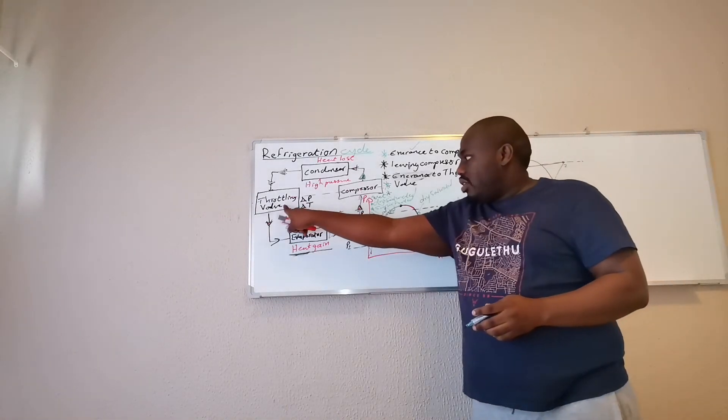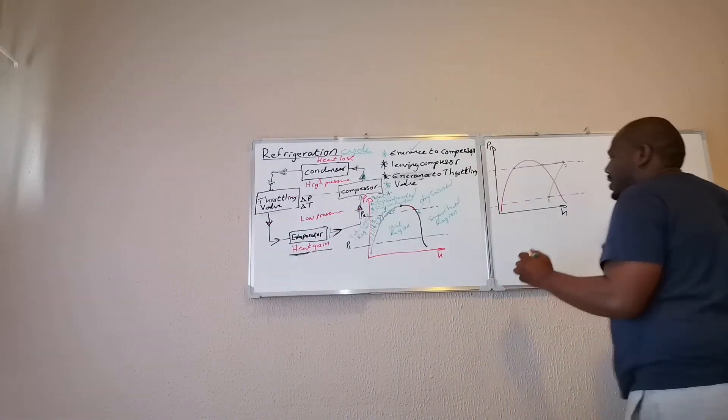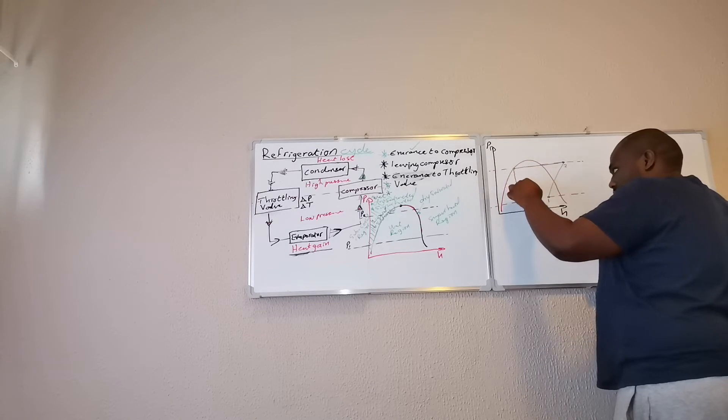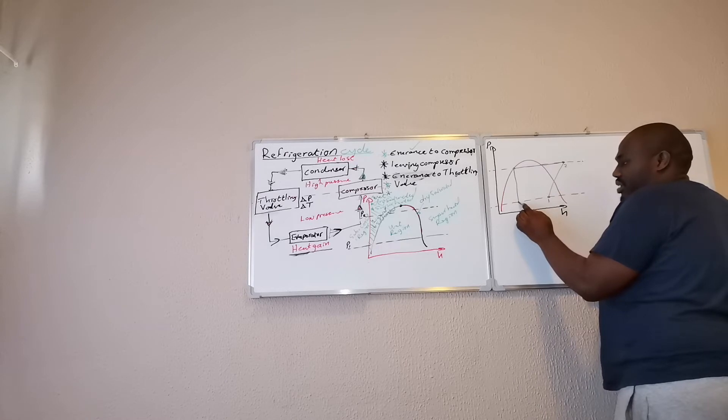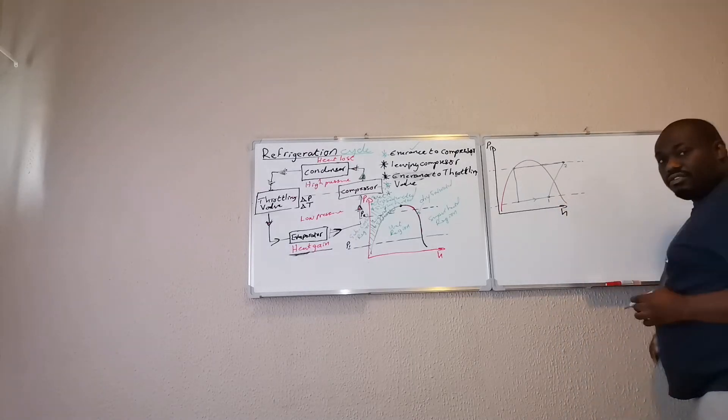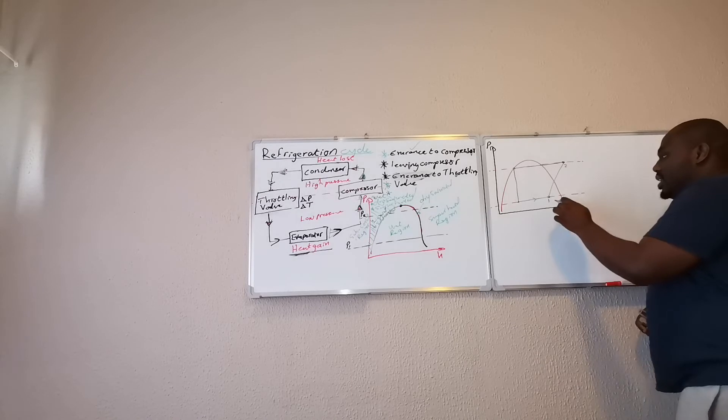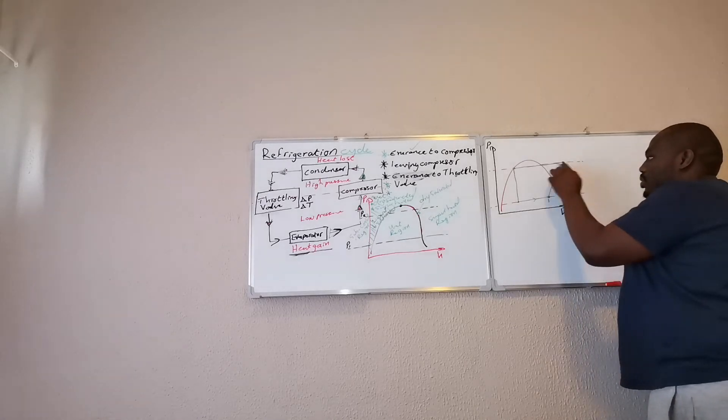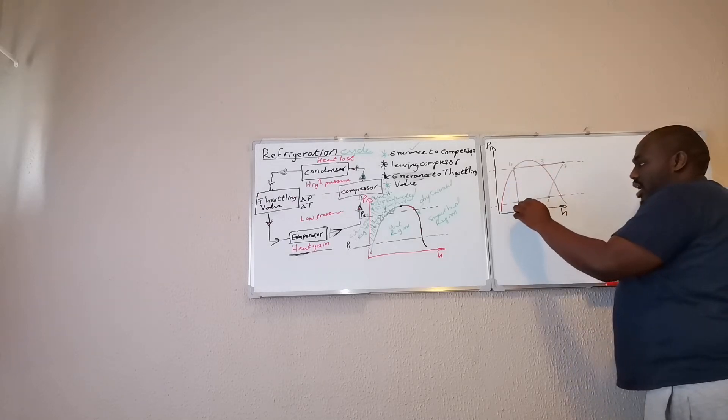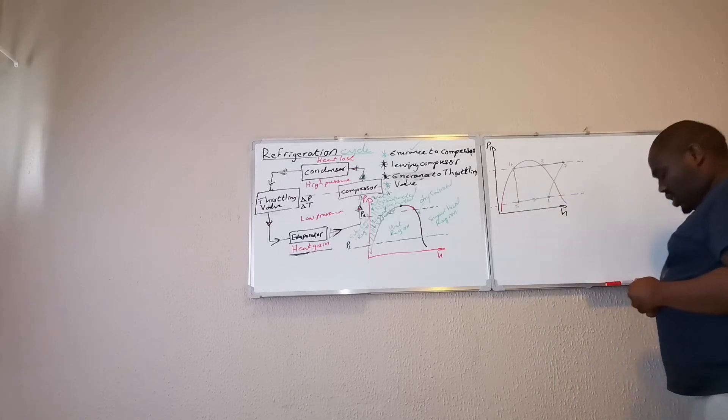Then, through my throttling valve, I'm going to experience a decrease in pressure at constant enthalpy. So, this is going straight down there. And heat is gained by my evaporator. It would be moving in that direction there. So, this would be my refrigerating cycle. So, let's just name the points. This would be point one, point two. That point there would be point three, point four. And here, I would have point five.